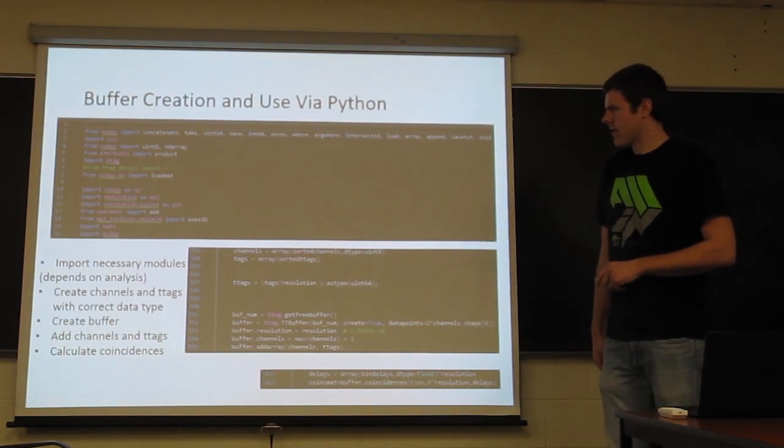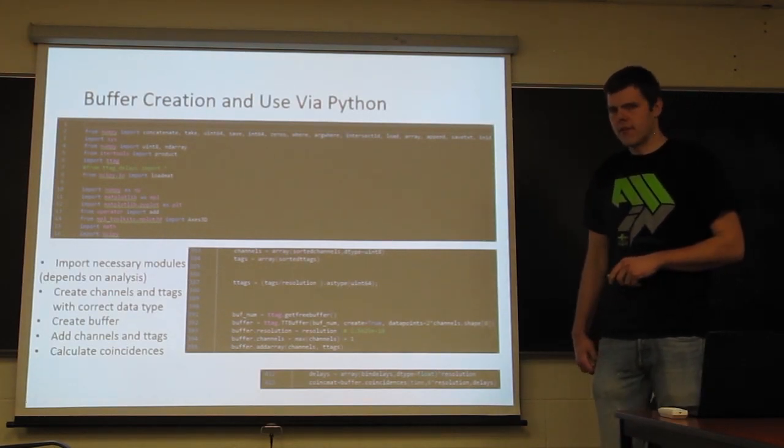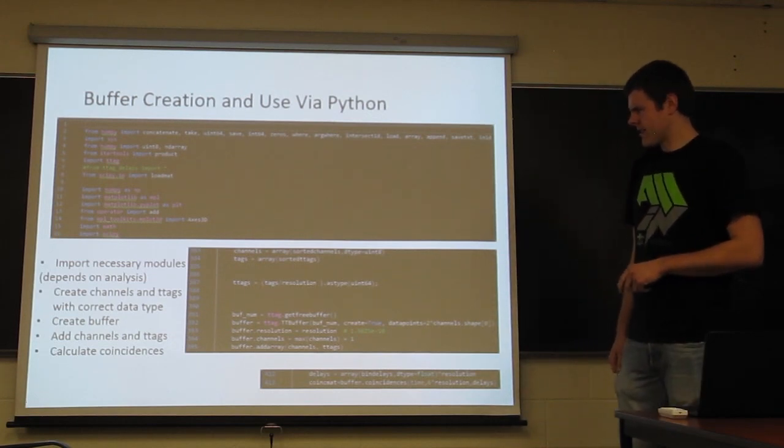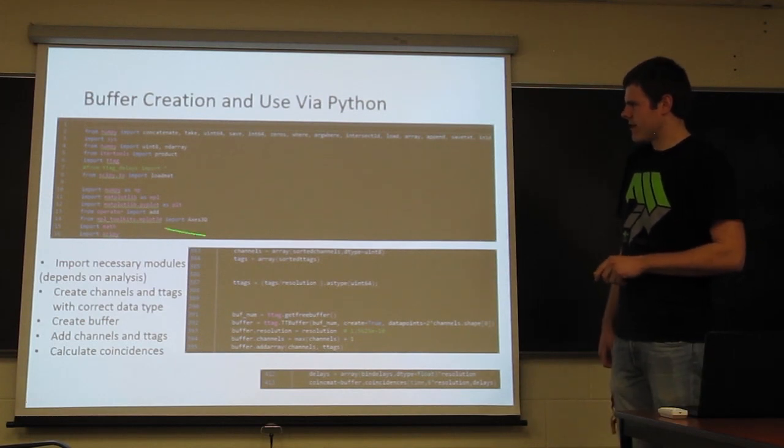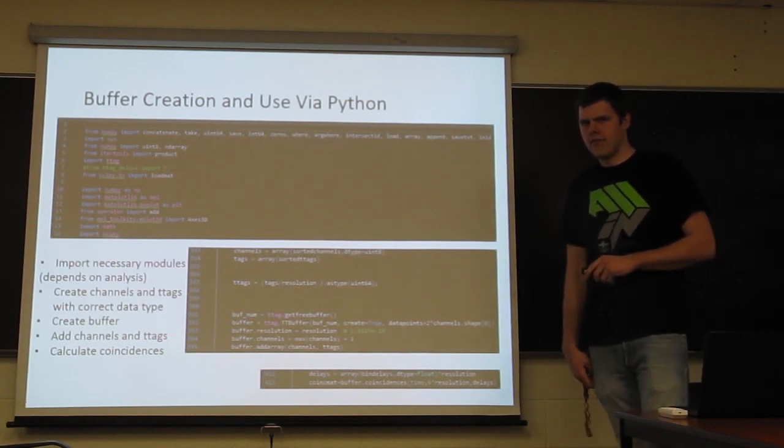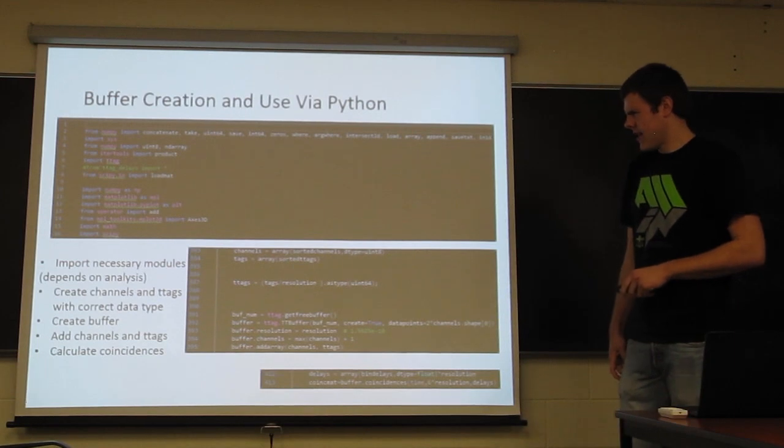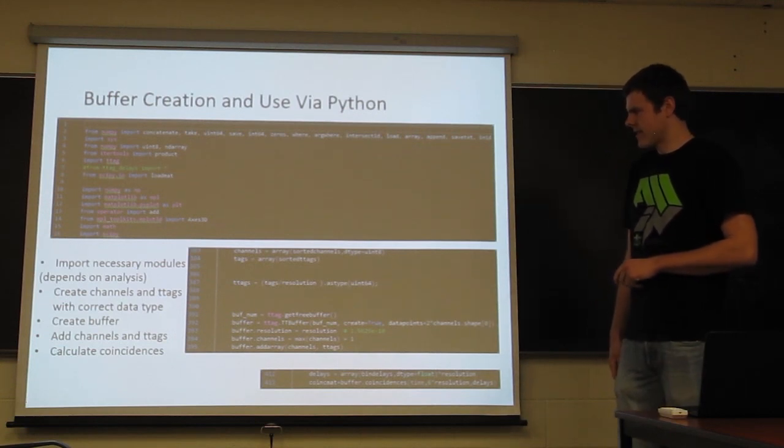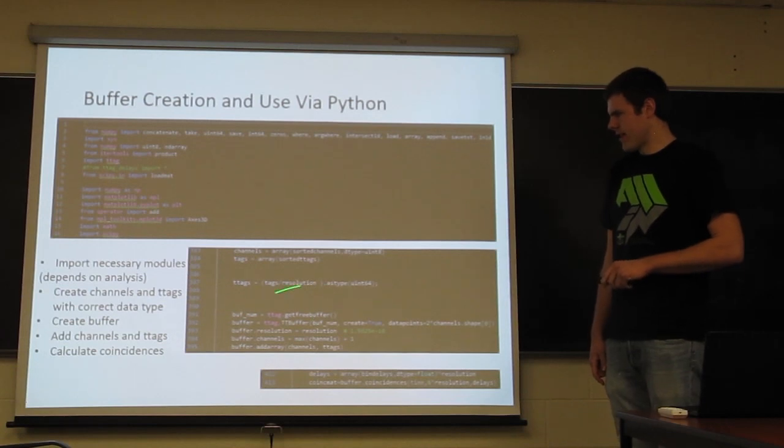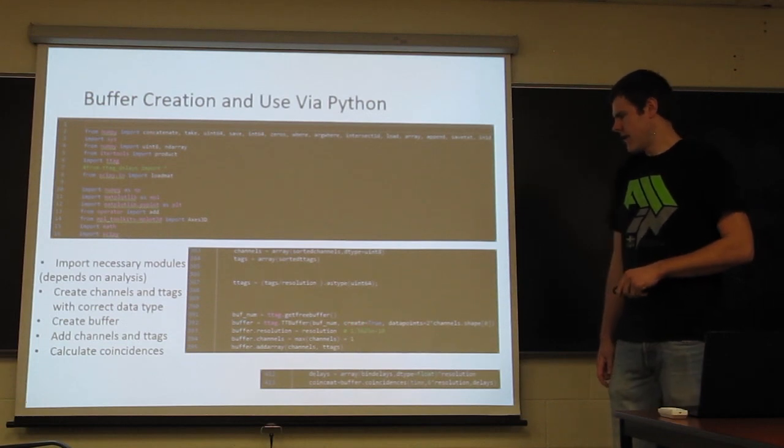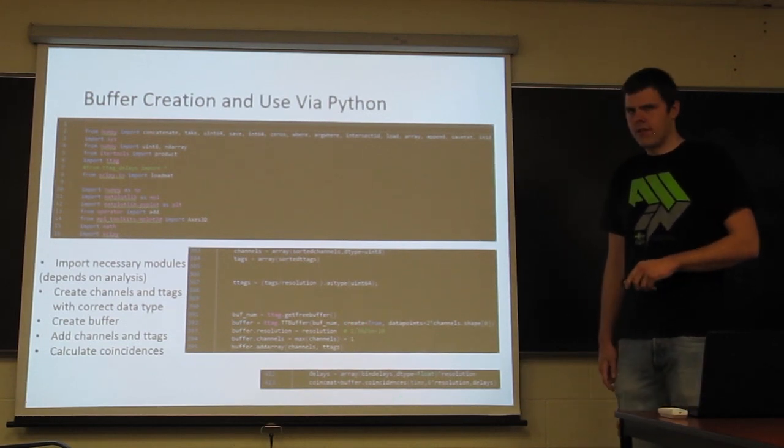So let me walk through quickly how you create a buffer and analyze it, put data in it, and analyze it how you want to. So you'll definitely need to add the right modules so that Python has the functions necessary to calculate everything you want. And then you'll need to make sure to create the channels and t-tags arrays with the correct data type. You'll need to create the buffer, and then after that you put the channels and the t-tags in the buffer, and finally you can do the analysis that you desire.